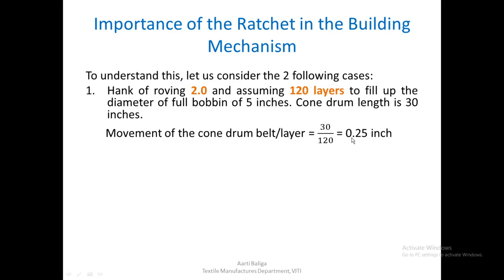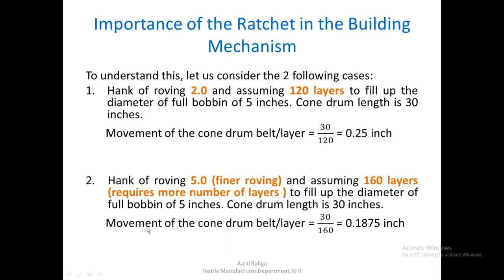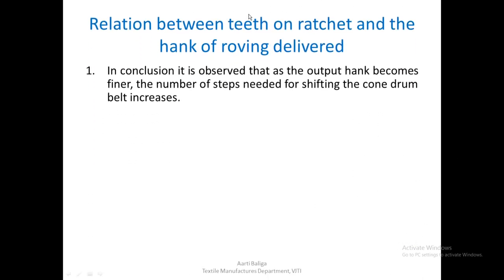Now consider another case where the hank of roving is finer, say 5. For the same full bobbin diameter of 5 inches, the number of layers increases to say 160. With the same cone drum length of 30 inches, the movement of the cone drum belt is 30 divided by 160, which is 0.1875 inches — lesser than before. Because the hank has become finer, the belt must move by a smaller distance every time.